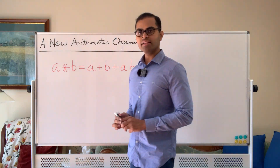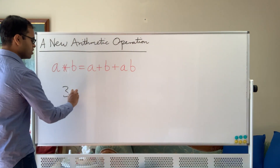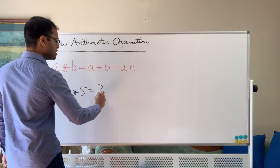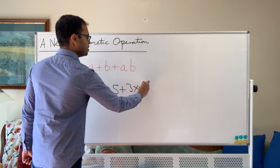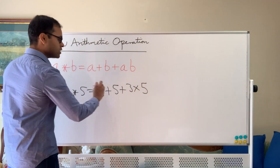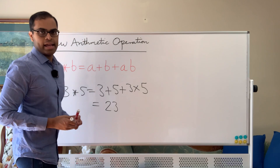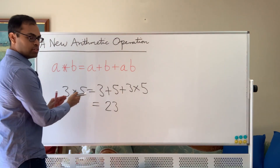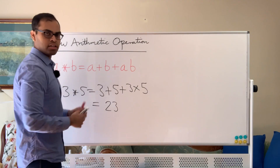So for example, let's calculate this for two numbers. Let's take 3 and 5. What is 3 star 5 going to be? Well, 3 star 5 by definition is going to be 3 plus 5 plus 3 times 5. So here a is 3 and b is 5, and you can work out this is 8 plus 15 which is 23. Now 23 is nothing like 8 or 15, so it's not like we're adding 3 and 5 or multiplying them — we're doing something weird to them to get 23.